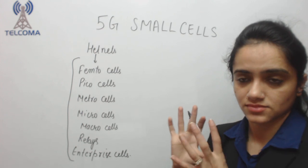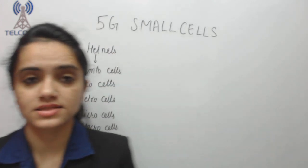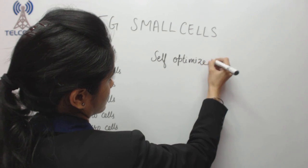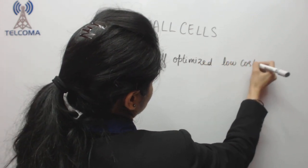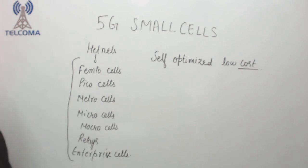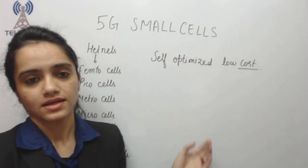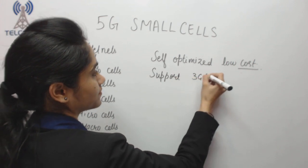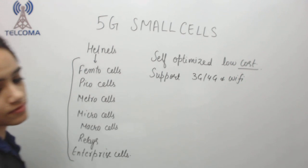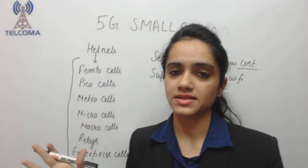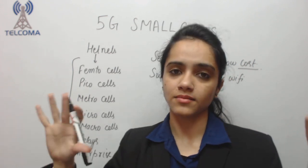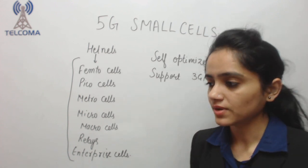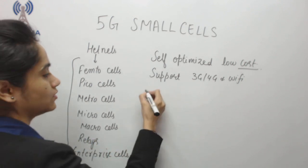What we require of small cells is that they should be self-optimized and low cost, with a focus on cost efficiency. These small cells should support multi-technology — 3G, 4G, as well as Wi-Fi. And there should be more small cells everywhere, meaning the area should be filled with a large number of small cells fully occupying the coverage area.